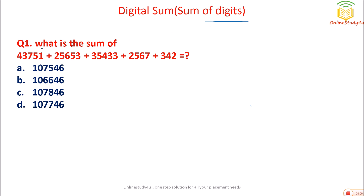I will first solve a question and then explain the concept. You can see: 5 plus 4 is 9, 7 plus 3 is 10, 10 plus 1 is 11, which becomes 2. Then 6 plus 3 is 9, 10 plus 2 is 12, which is 3. Then 5 plus 4 is 9, and 3 3 9 becomes 0. 7 plus 2 is 9, which gives 0. So 3 plus 4 is 7 — the digital sum is 7. Checking option D: 6 plus 4 is 10, plus 7 is 17, plus 1 is 18, plus 7 is 25, and 25 is nothing but 7. So option D is the correct answer.